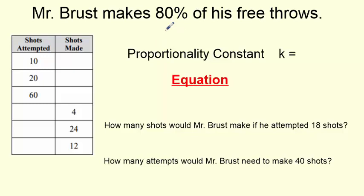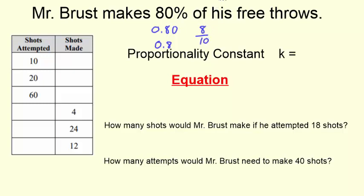We have to know 80% as a decimal. If Mr. Brust makes 80% of his free throws, what is he shooting as a decimal? Well, remember, just move the decimal over — it's 0.8. Can I make that as a fraction? Sure, this is 8 tenths. We can rewrite this a couple different ways. In context, it means I make 8 out of every 10 shots — I make 80% of my shots.